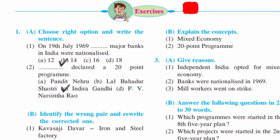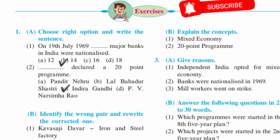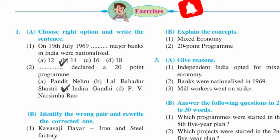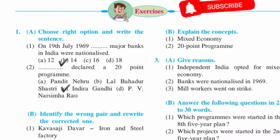First one: on 19th July 1969, 14 major banks in India were nationalized. Second: Indira Gandhi declared the 20-point program.